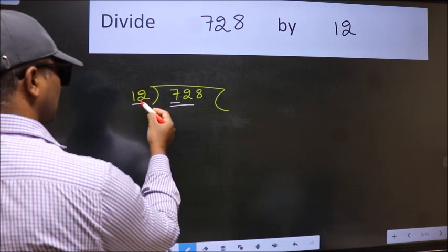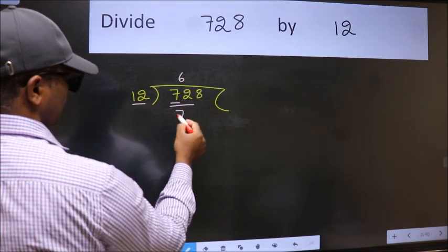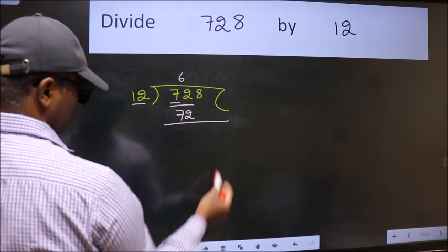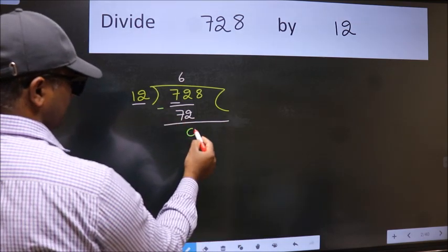When do we get 72 in 12 table? 12, 6, 72. Now we should subtract. We get 0.